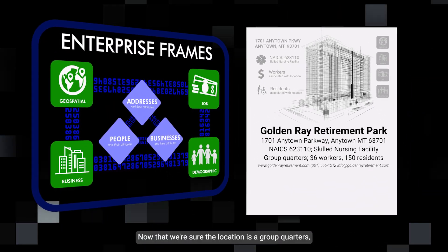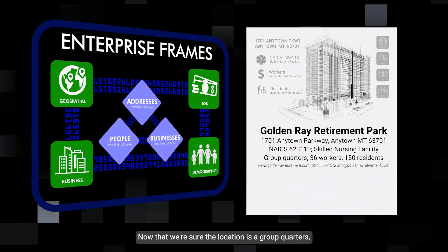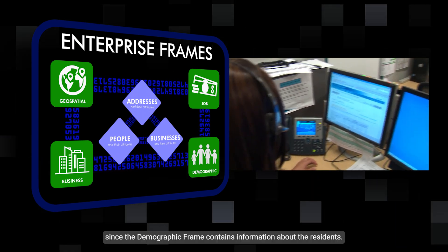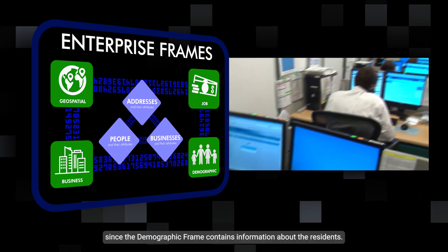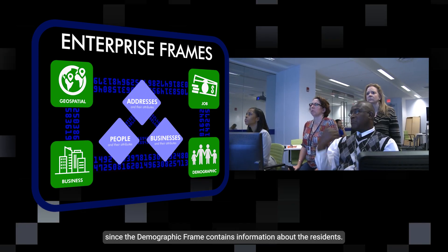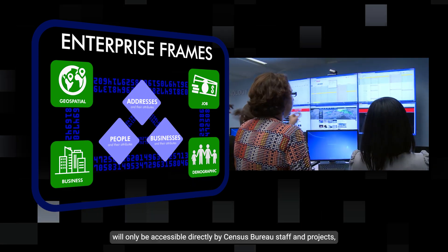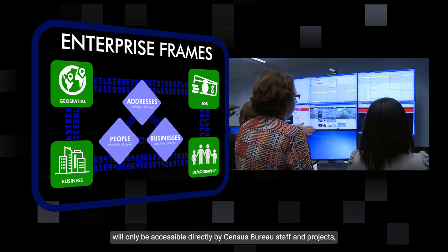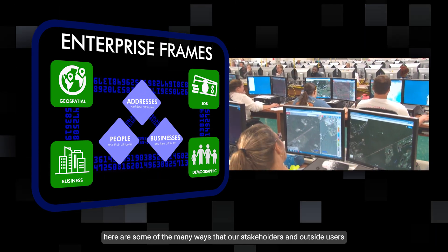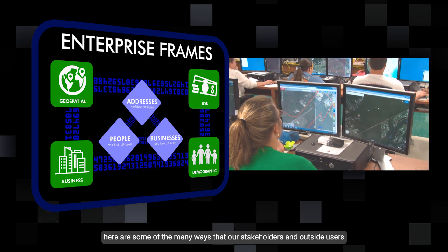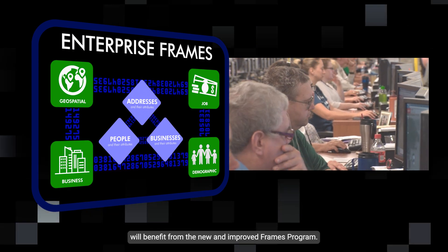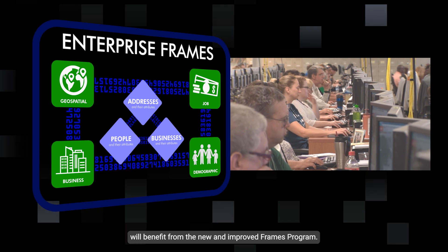Now that we're sure the location is a group quarters, we can make decisions about enumeration and follow-up, since the demographic frame contains information about the residents. While the data within the frames will only be accessible directly by Census Bureau staff and projects, here are some of the many ways that our stakeholders and outside users will benefit from the new and improved frames program.